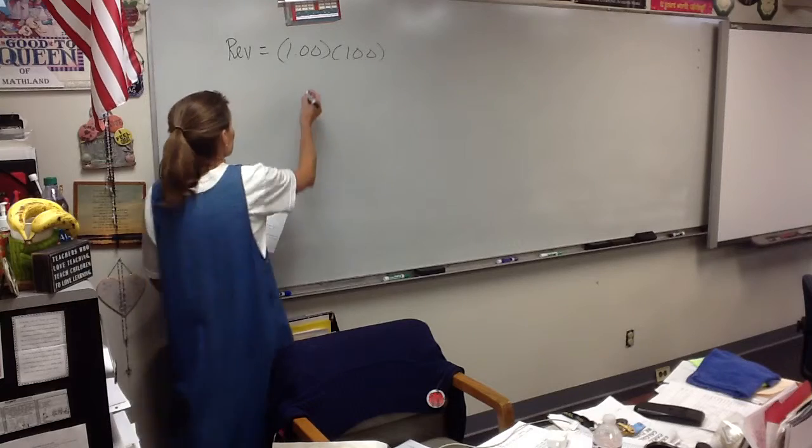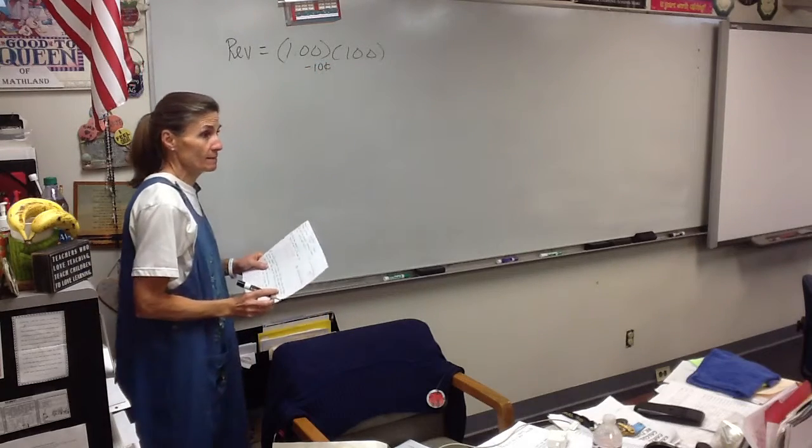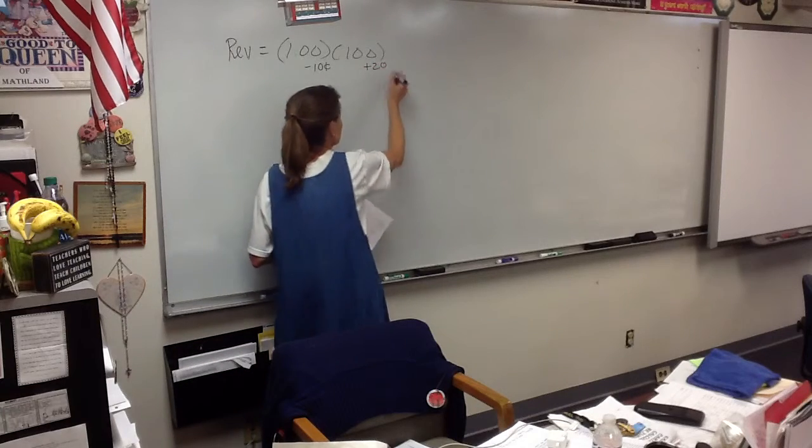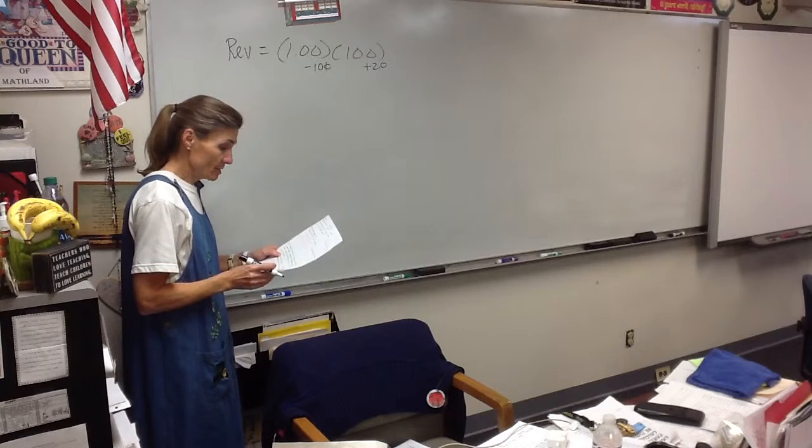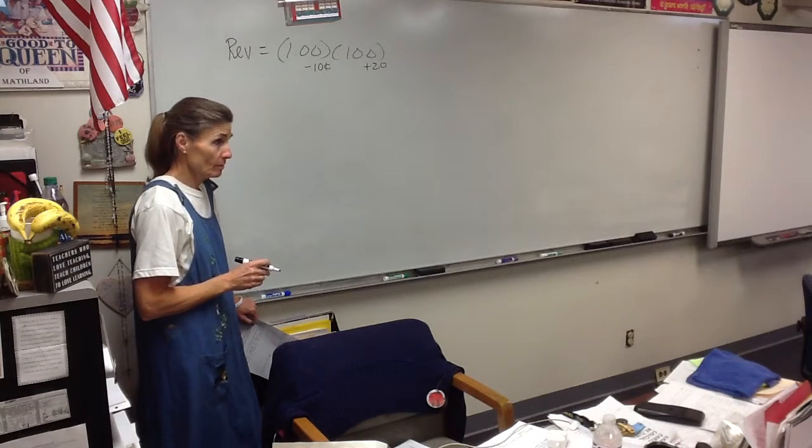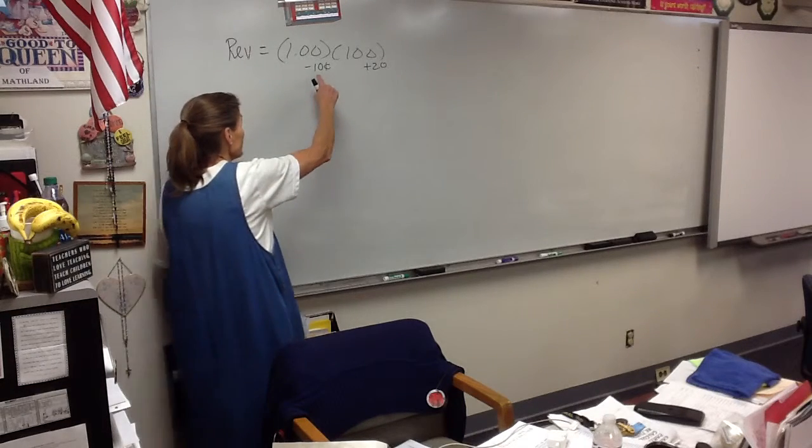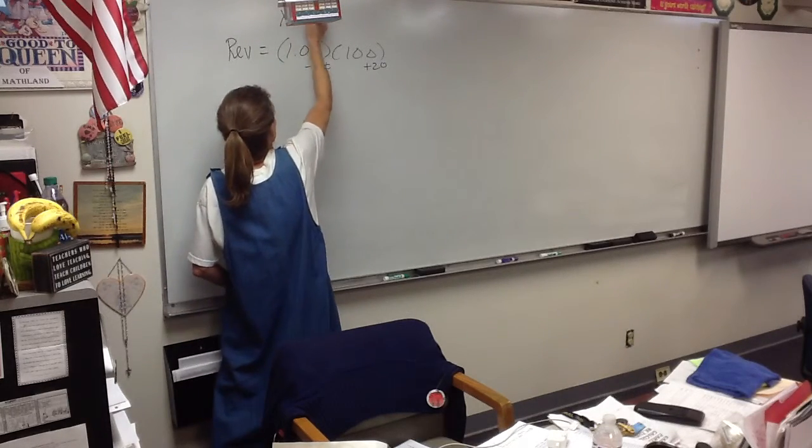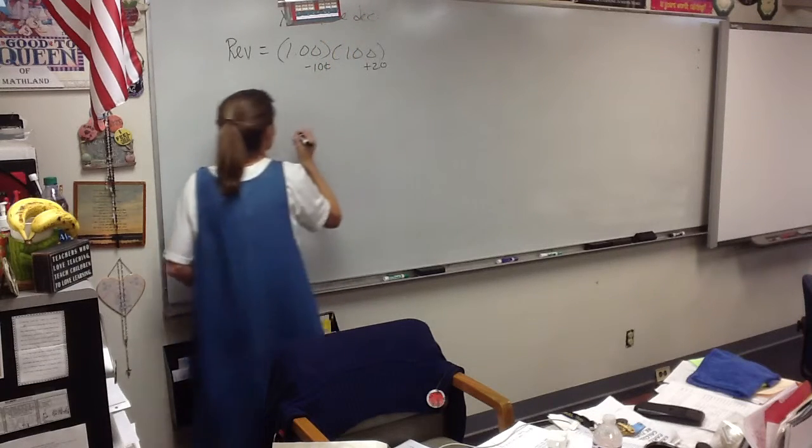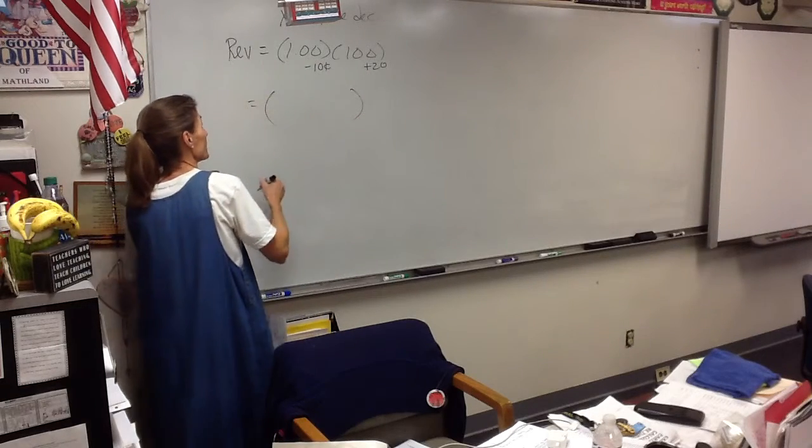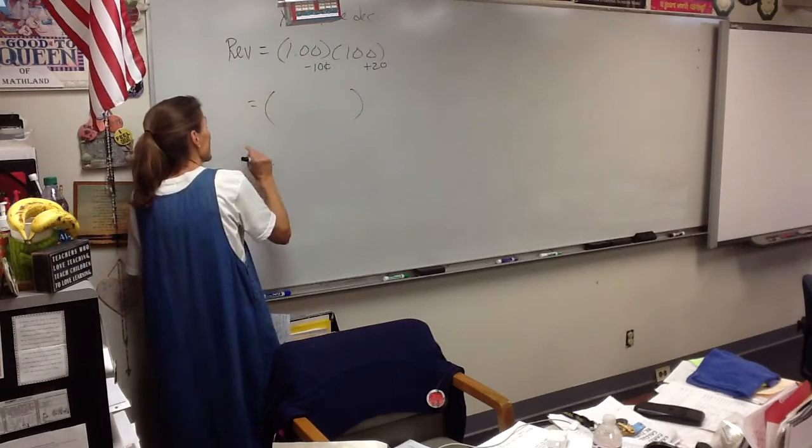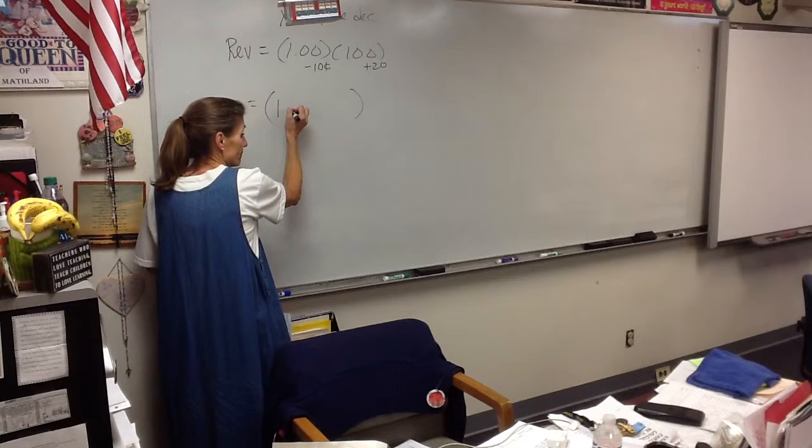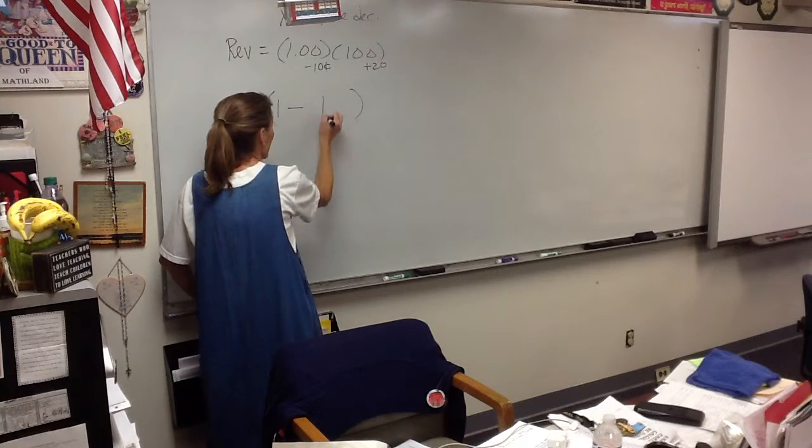That is going to change because I'm going to take ten cents increments away from the price, and that's going to increase in 20 increments the number of papers I sell. So what do I need to figure out? How many times do I want to lower the price so that this number will come out to be as big as possible? So x will be the number of price decreases.